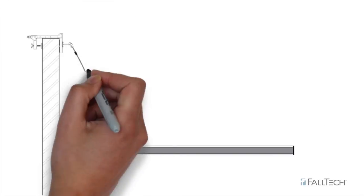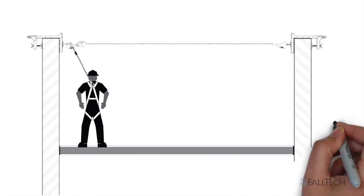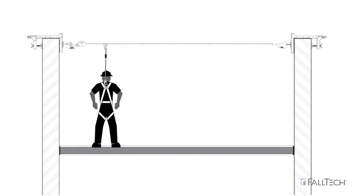You can also attach a second parapet wall anchor to an opposing wall and throw in an HLL kit, and you've got a two- or four-person system to accommodate the whole crew.